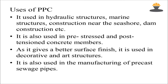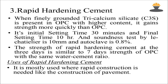The two main uses are: pre-stressed and post-tensioned concrete members, and pre-cast sewage pipes. The third cement type is rapid hardening cement.